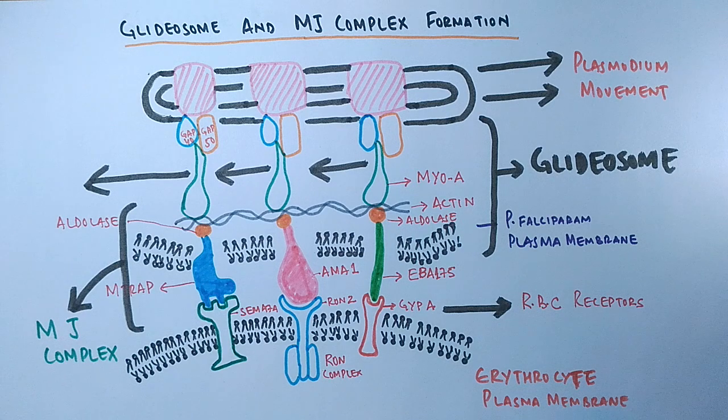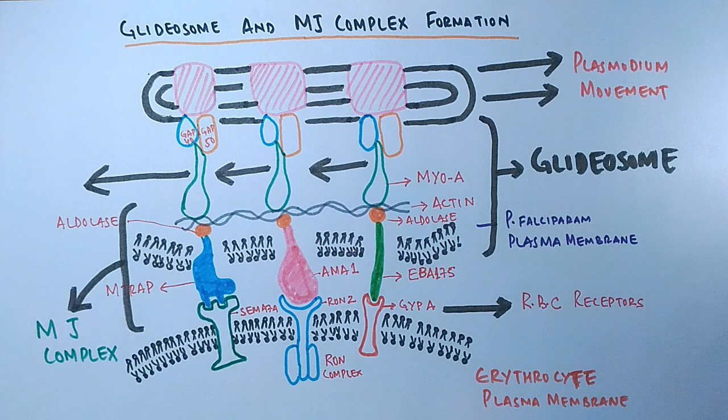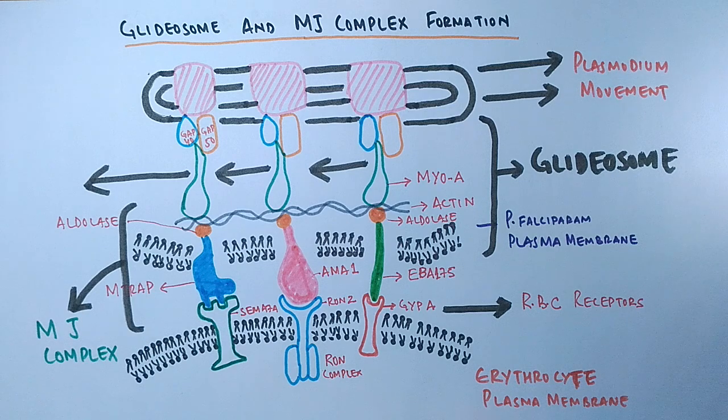Thus, due to continuous actin polymerization and junction moving into the cell, the merozoite finally gets entry into the host cell. So this is all about the mechanism of Plasmodium invasion into erythrocytes.